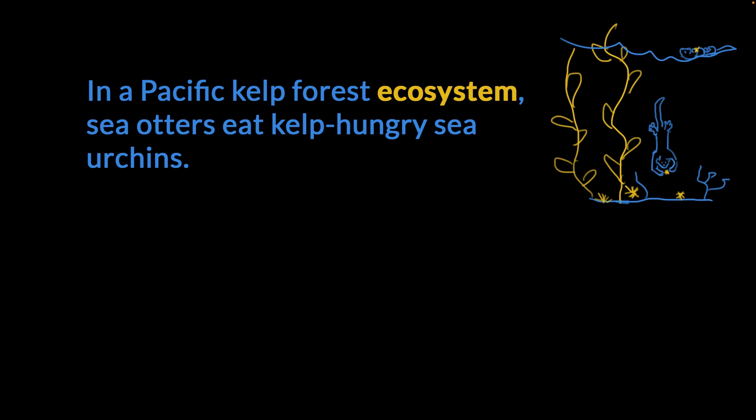In a Pacific kelp forest ecosystem, sea otters eat kelp-hungry sea urchins. This is the sort of environment it is — it's an undersea forest. And it's not just the kelp, it's everything present there. From the algae and the sand and the rocks and the seawater to the living creatures. You have to back up and see all of them working in concert. It's all connected.